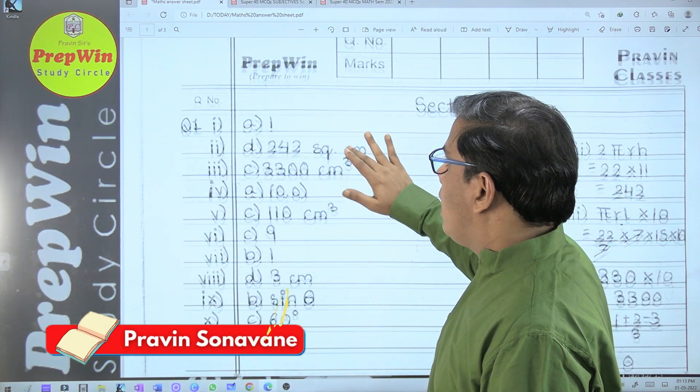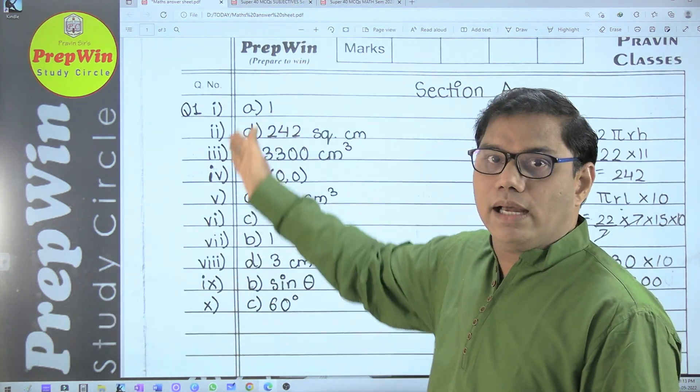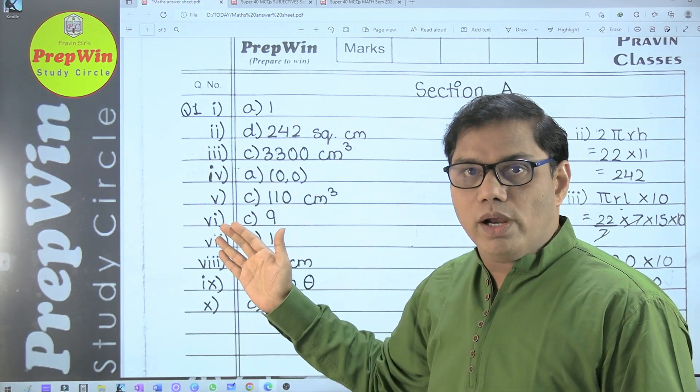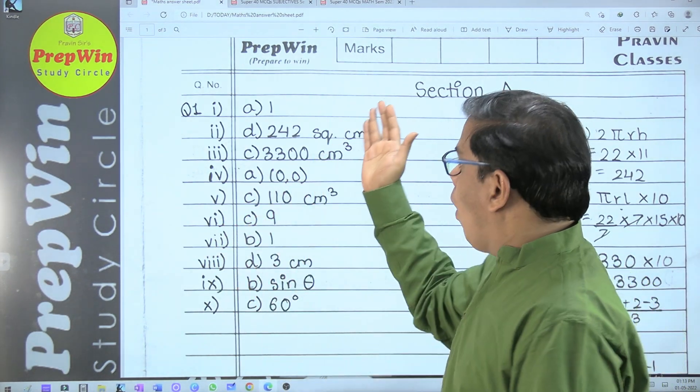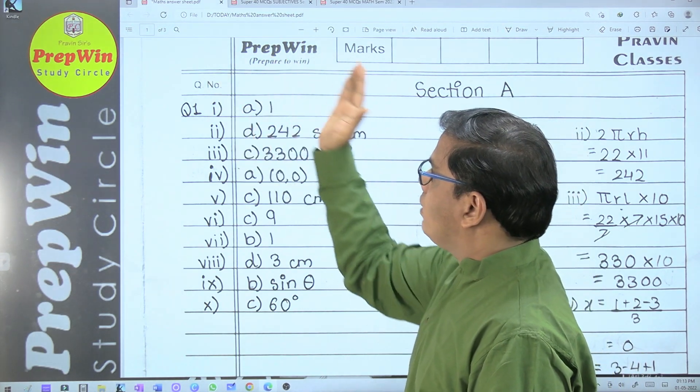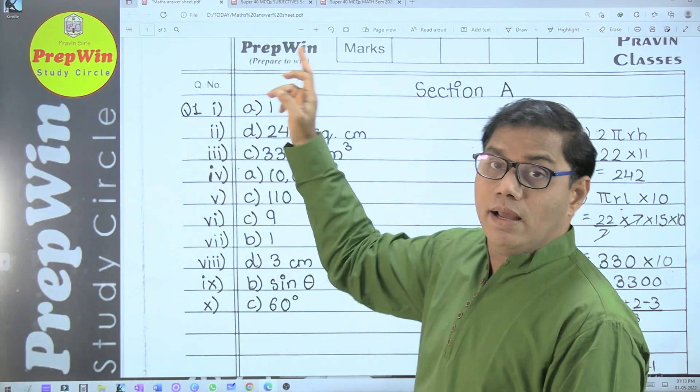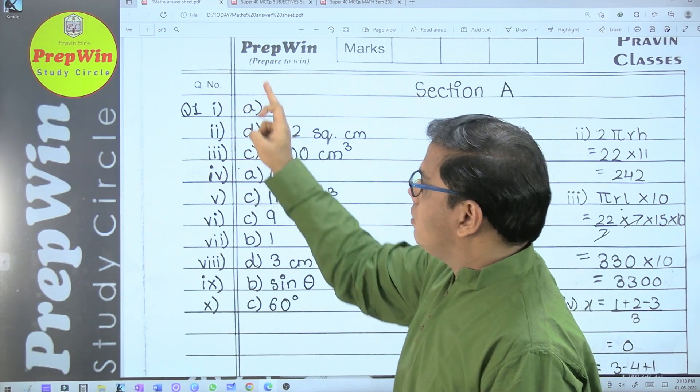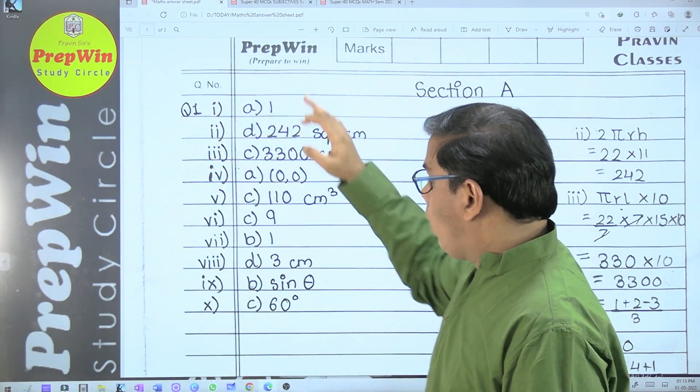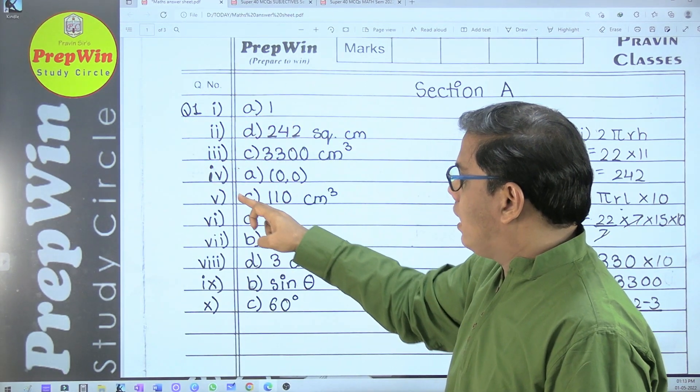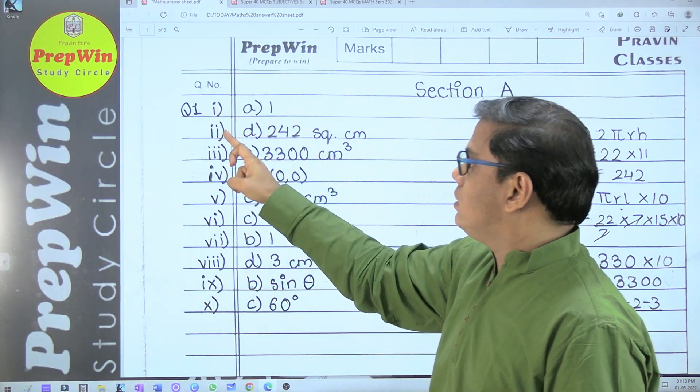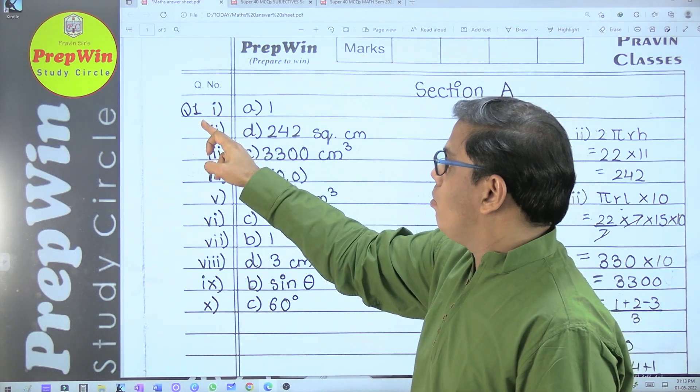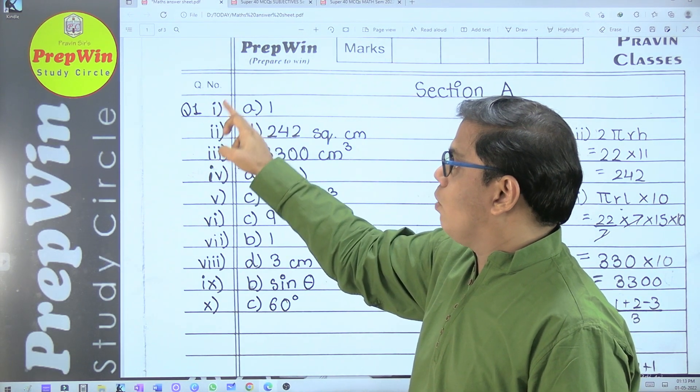You will see that there is a margin, a vertical line. All the question numbers which you are going to write will be on the left-hand side of the margin. Can you see? This is question number one which is an MCQ-based question. There are 10 sub-questions. So students should write question number one, sub-question number one.